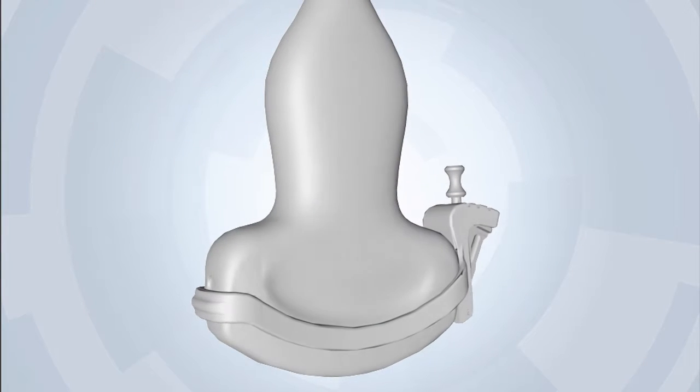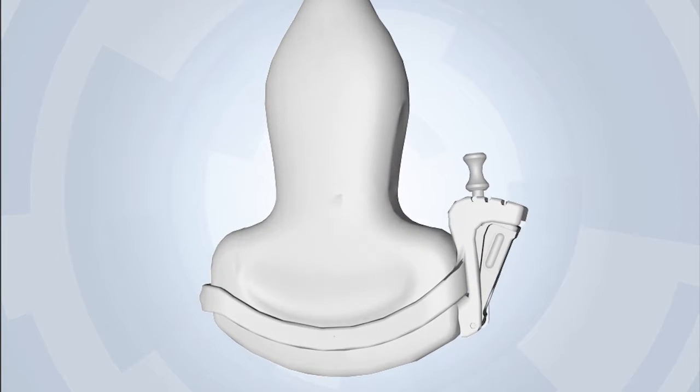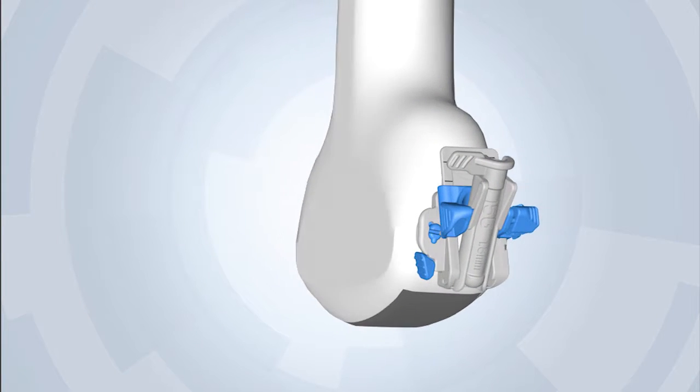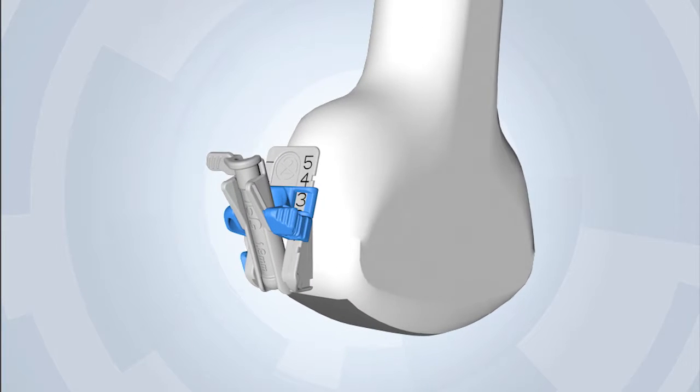Until now, angle selection has traditionally been a function of the bracket and lock pin. With Versa's direct attach design, you can quickly adjust to five needle angles within the guide itself.